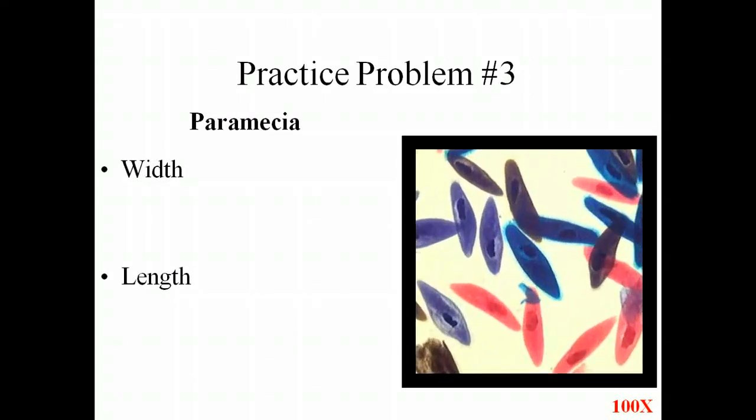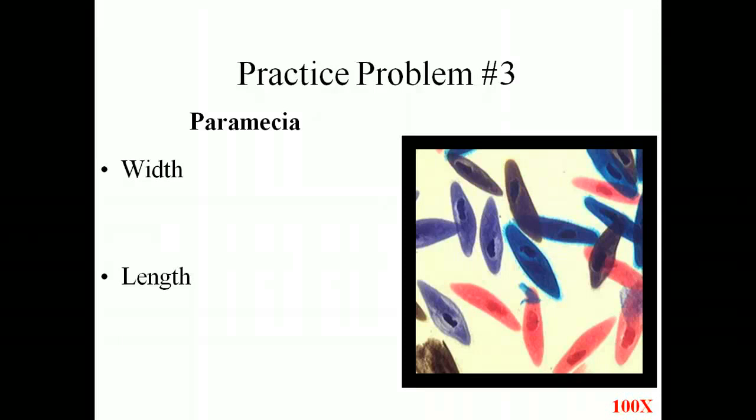Problem three. Here's all kinds of paramecium. These things have been stained, so they're a lot more visible in color. But they're all roughly the same size in length and width. I would like you to please go ahead and calculate or estimate the size of a paramecium. It doesn't matter which one you pick. They're all roughly the same size. Estimate the width and the length. You need to bring the answers to this one to class tomorrow, and I will call on you to make sure that you have done these correctly because you're going to be asked to do this in lab today. Everyone needs to know how to make microscopic measurements correctly and accurately. See you in class.